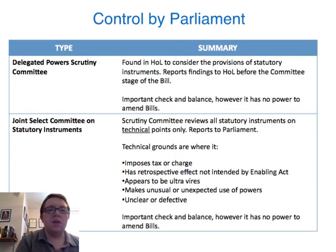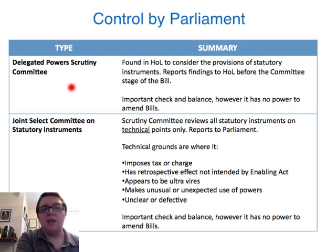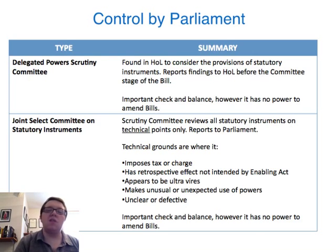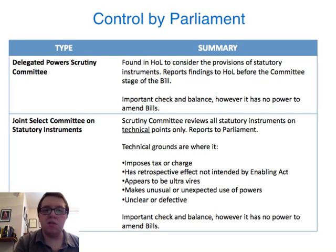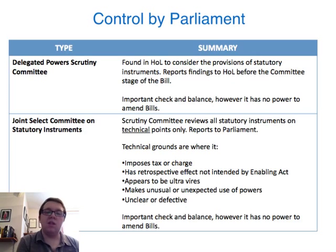These two controls by parliament are often mistaken for each other, so it's important we remember the differences. First, the Delegated Power Scrutiny Committee, found in the House of Lords, provides an important check and balance on statutory instruments before they are passed. The committee looks at whether the statutory instrument will work, whether there are any foreseeable problems or errors, and then makes its report back to the House of Lords before the committee stage of the bill. One disadvantage is that it doesn't have the power to amend bills itself — it can only report and hope its recommendations are actioned by parliament.